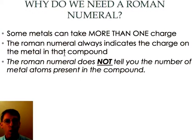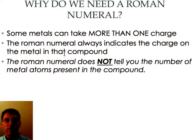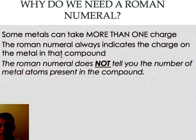The Roman numeral again always indicates the charge that is on the metal and the Roman numeral never tells you the number of metal atoms that are present in the compound. The Roman numeral simply tells you the charge that the metal is going to take.